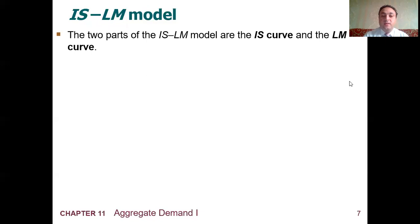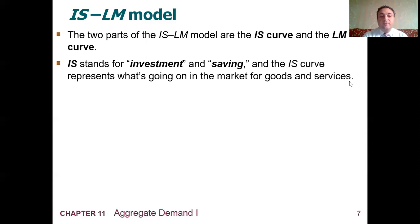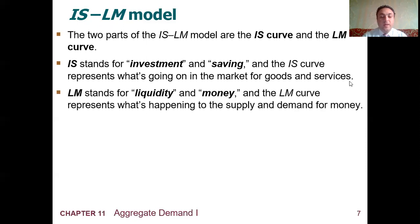The IS-LM model has two parts: the IS curve and the LM curve. IS stands for investment and saving, and the IS curve represents what is going on in the market for goods and services. LM stands for liquidity and money, and the LM curve represents what is happening to the supply and demand for money.